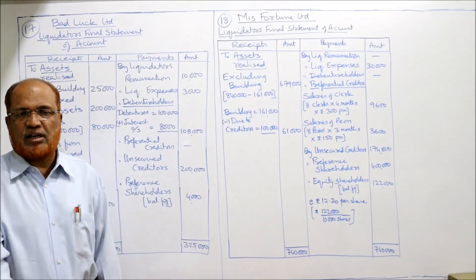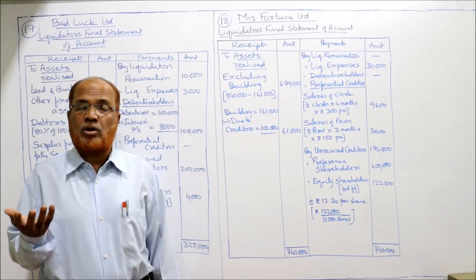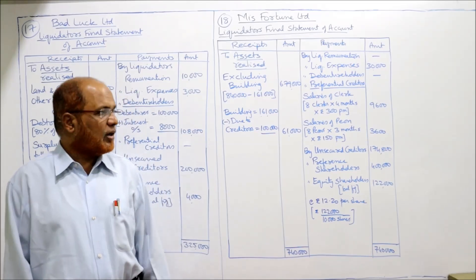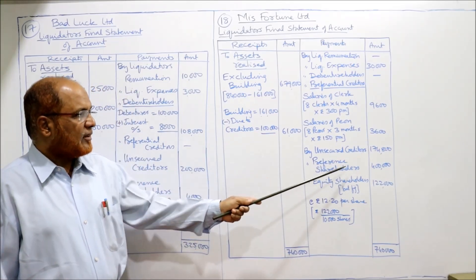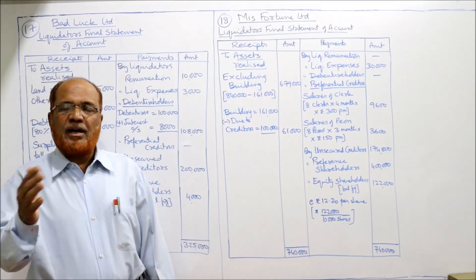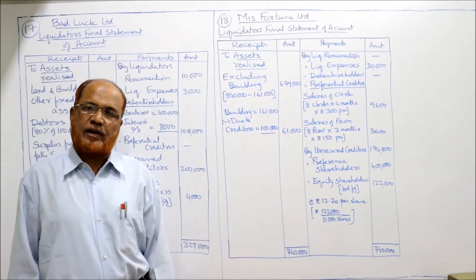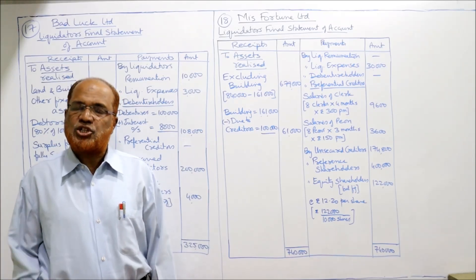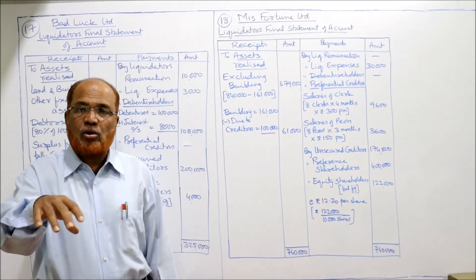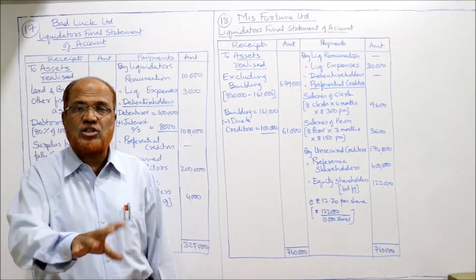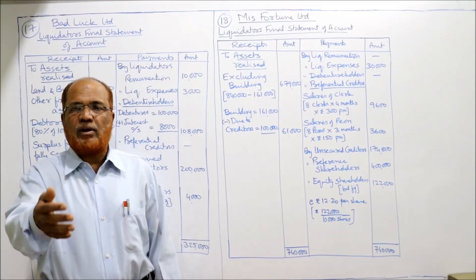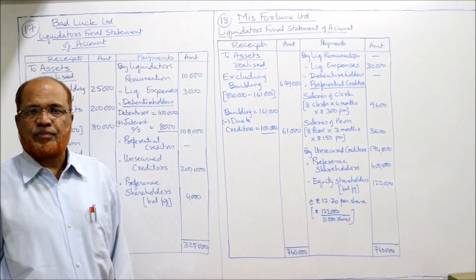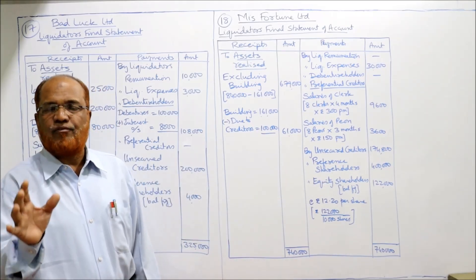After paying all outside parties including unsecured creditors, the remaining amount belongs to shareholders. Among shareholders, preference shareholders are paid first, then equity shareholders get the remainder. Preference shareholders will get 4 lakh rupees — 4,000 shares of rupees 100 each. The remaining balancing figure goes to equity shareholders.